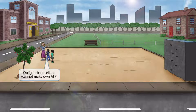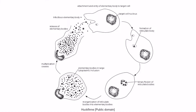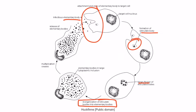Chlamydia trachomatis has a unique lifestyle, which is high yield for Step 1. The organism has two forms: elementary bodies and reticulate bodies. Elementary bodies are the infectious form that enter the cell via endocytosis. Once inside the cell, the elementary bodies form reticulate bodies, which replicate through binary fission and are then reorganized into elementary bodies. Eventually, the cell is destroyed, elementary bodies are released, and the cycle is repeated.